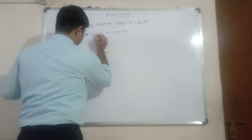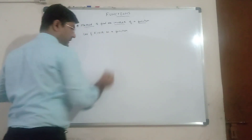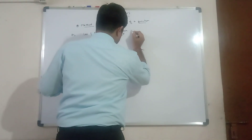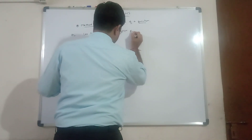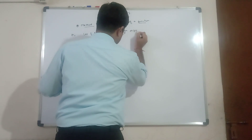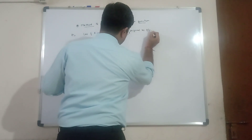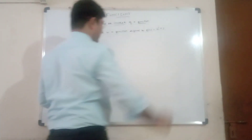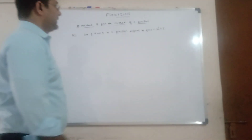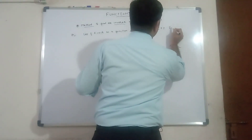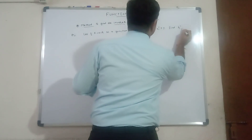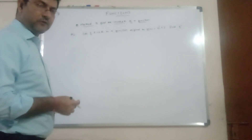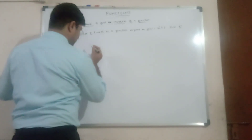Now let us consider one more example. Let f from R to R, where R is the set of real numbers, be a function defined by f(x) = x³ + 3. We have to find f inverse. We will follow the steps given in the method to find the inverse.